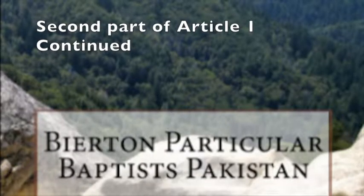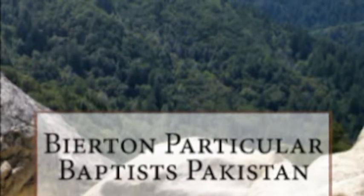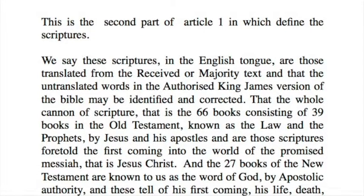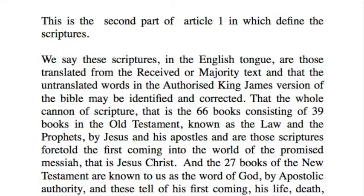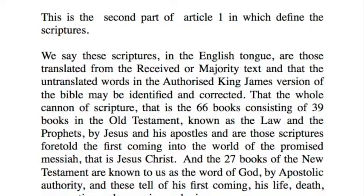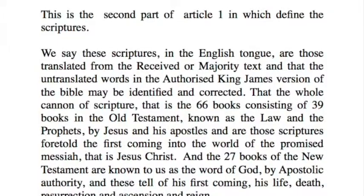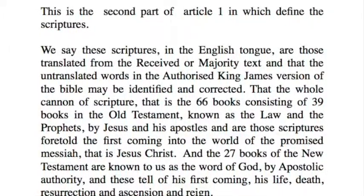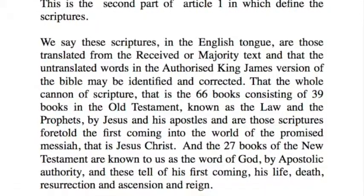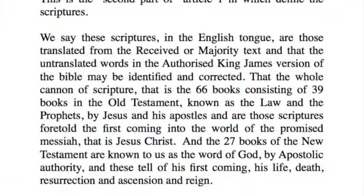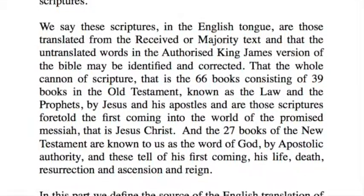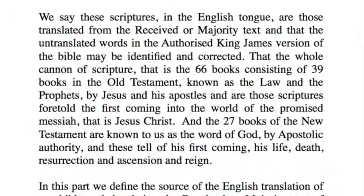This is the second part of Article 1 in which we define the Scriptures. We say these Scriptures in the English tongue are those translated from the received or majority text, and that the untranslated words in the authorised King James Version of the Bible may be identified and corrected, that the whole canon of Scripture — that is, the 66 books consisting of 39 books of the Old Testament — known as the Law and the Prophets by Jesus and his Apostles.